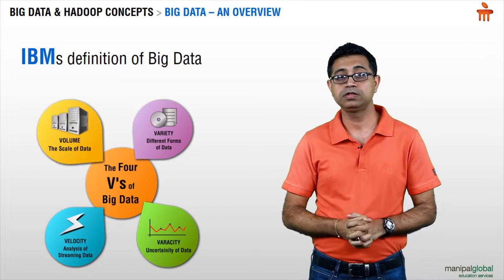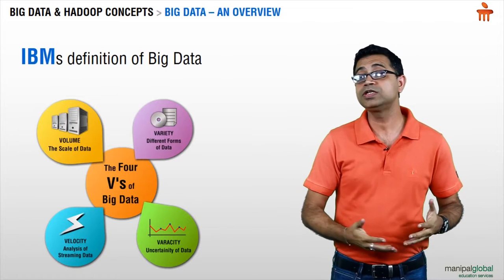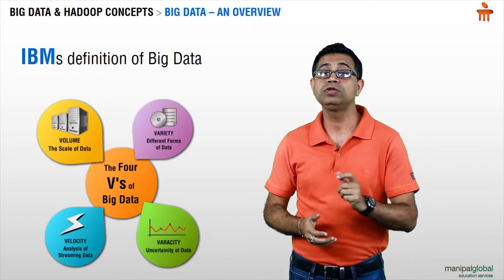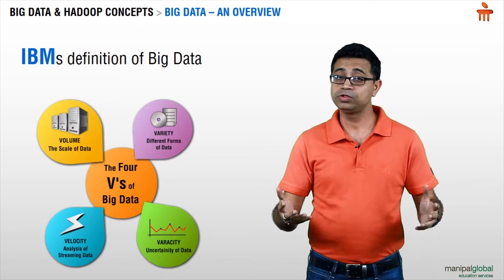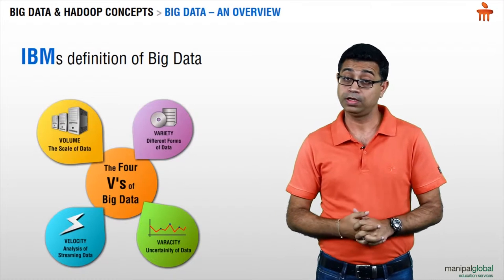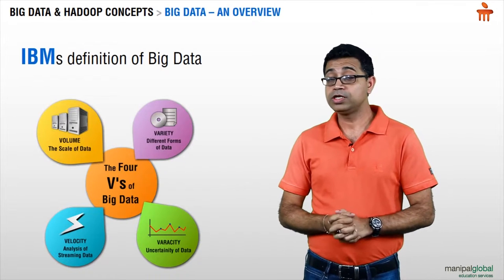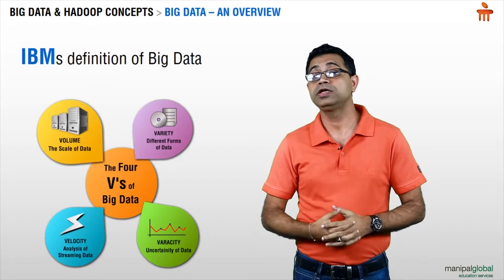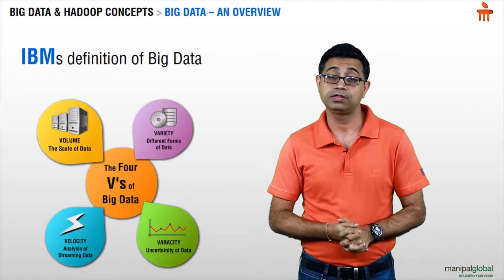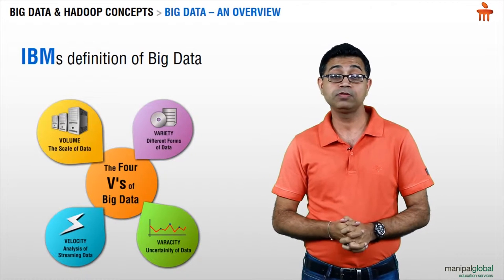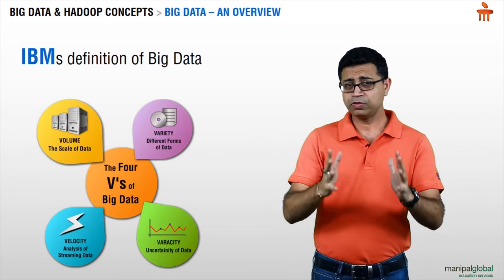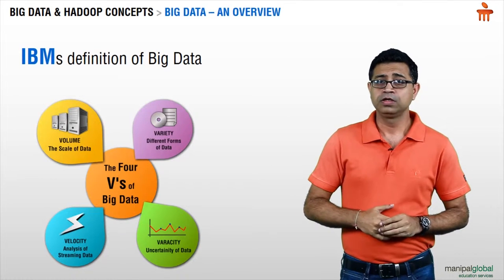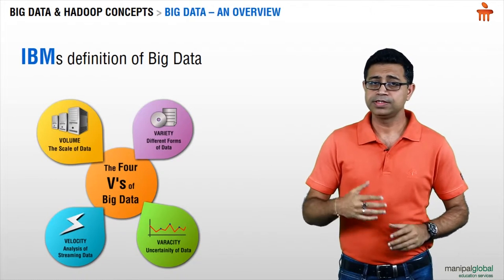And then there is veracity — how would you know that the data being generated is genuine? If you have huge data and are doing analytics on top of it, what is the guarantee that the results you are getting are genuine, right, and going to be of help to you? These are the four parameters which IBM used to define big data as a concept.